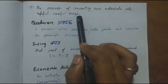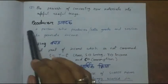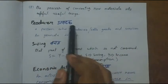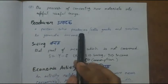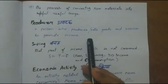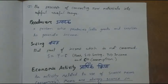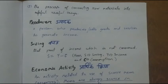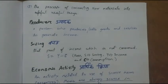Who is a producer? A producer is a person who produces or sells goods and services to generate income. Any person who wants to generate income — by selling goods or services, or by converting raw material into useful things — will be known as a producer.